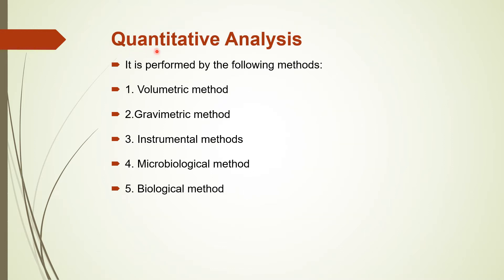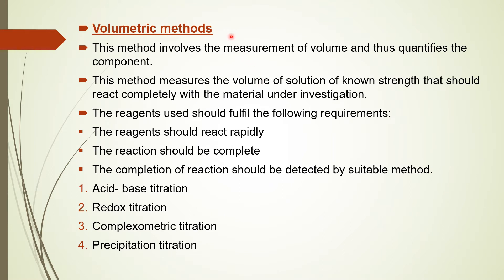Quantitative analysis can be performed using different methods: volumetric analysis, gravimetric analysis, instrumental methods, microbiological methods, and biological methods. The first method — volumetric analysis, also called titrations — involves the measurement of volume to quantify the component. This method measures the volume of a solution of known strength that reacts completely with the material under investigation.